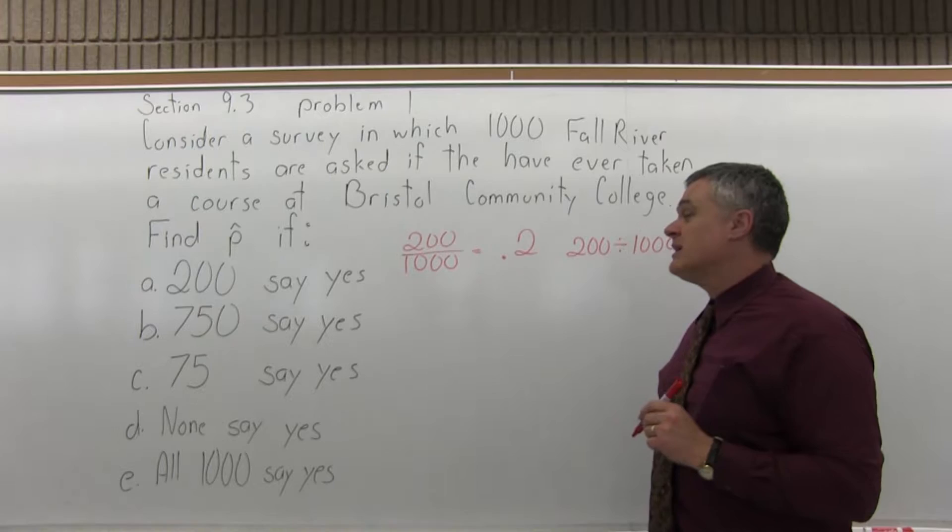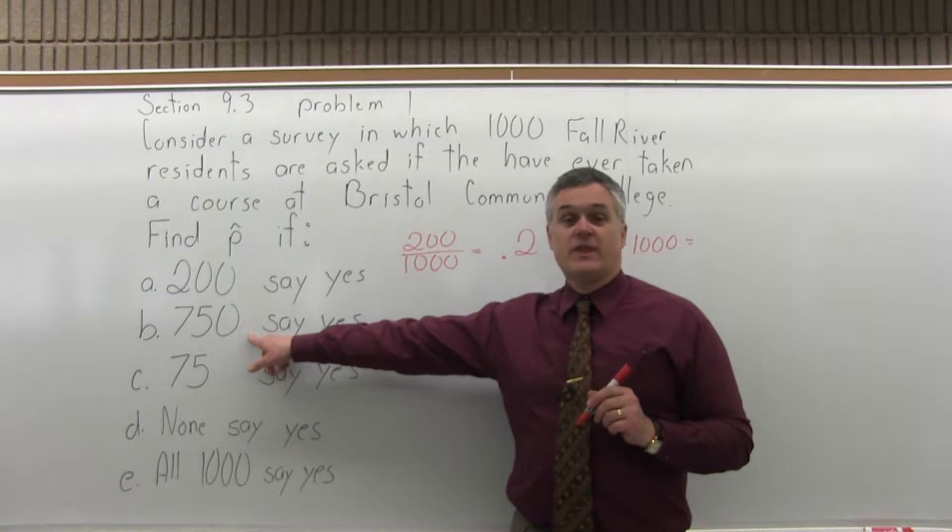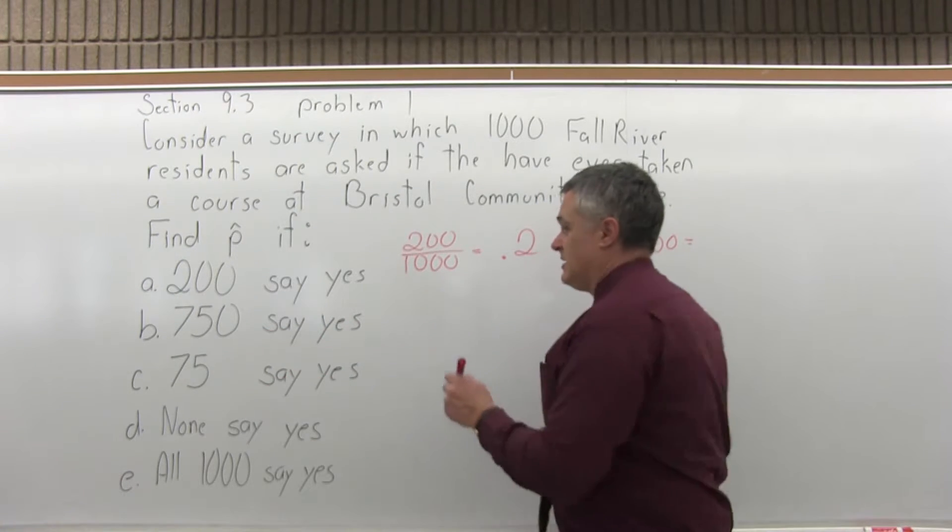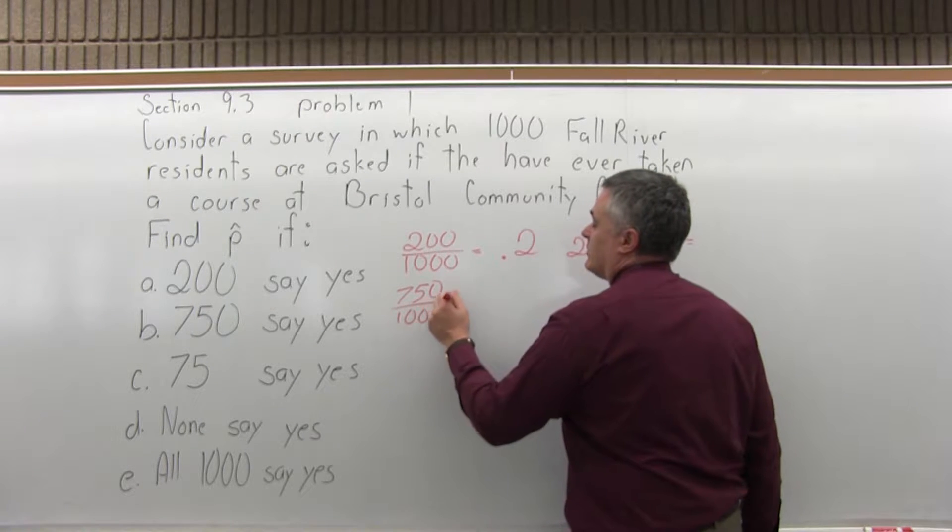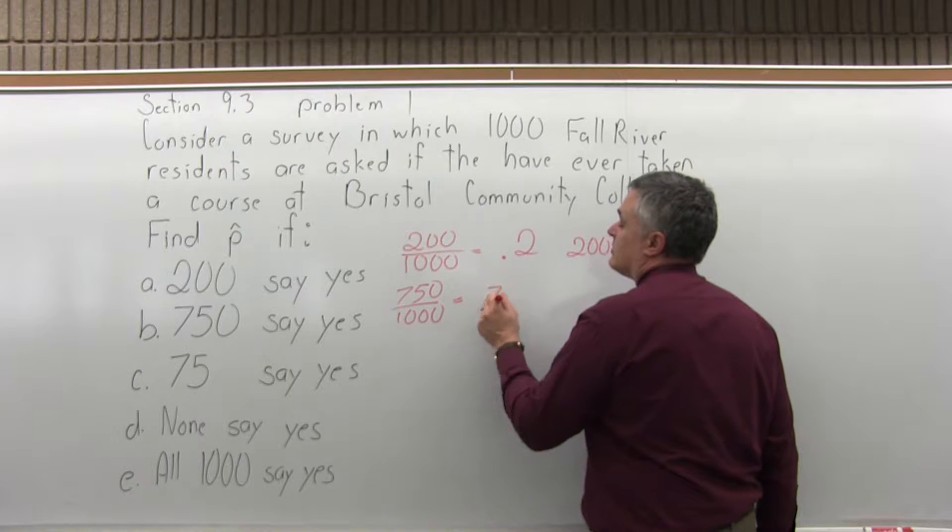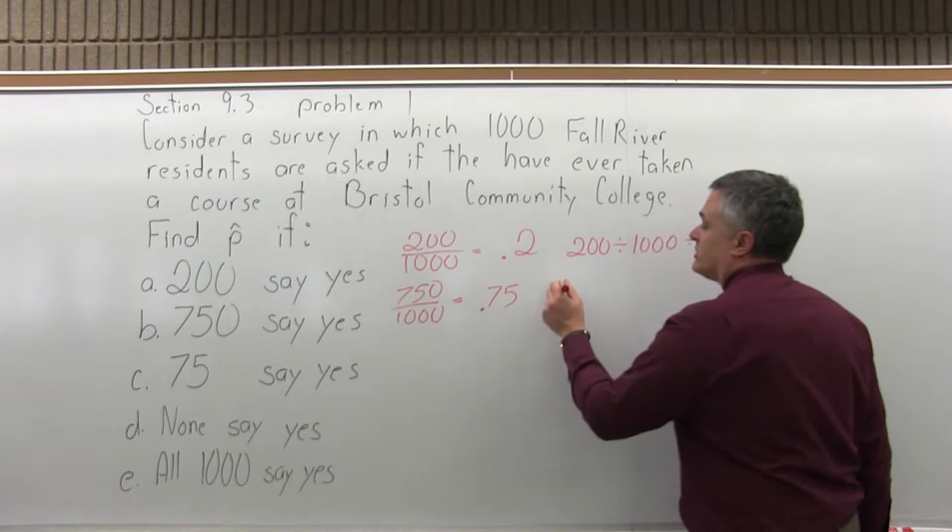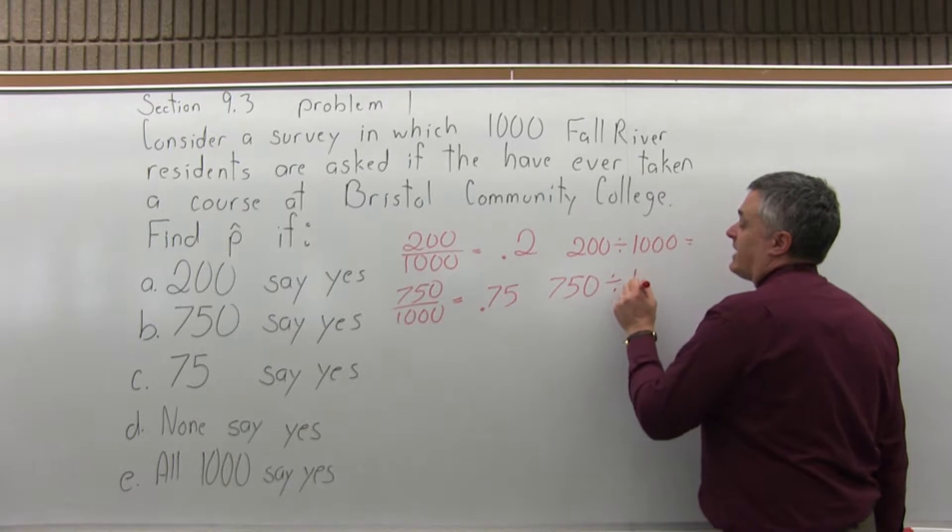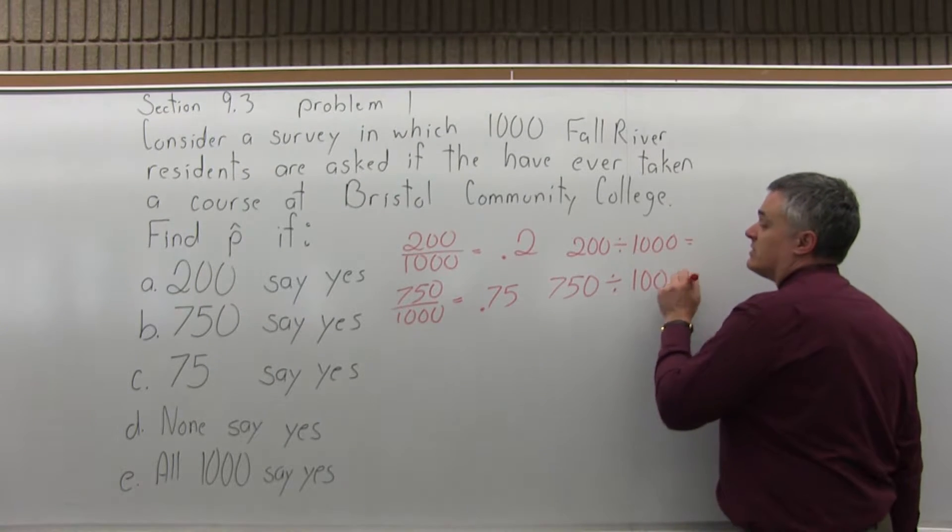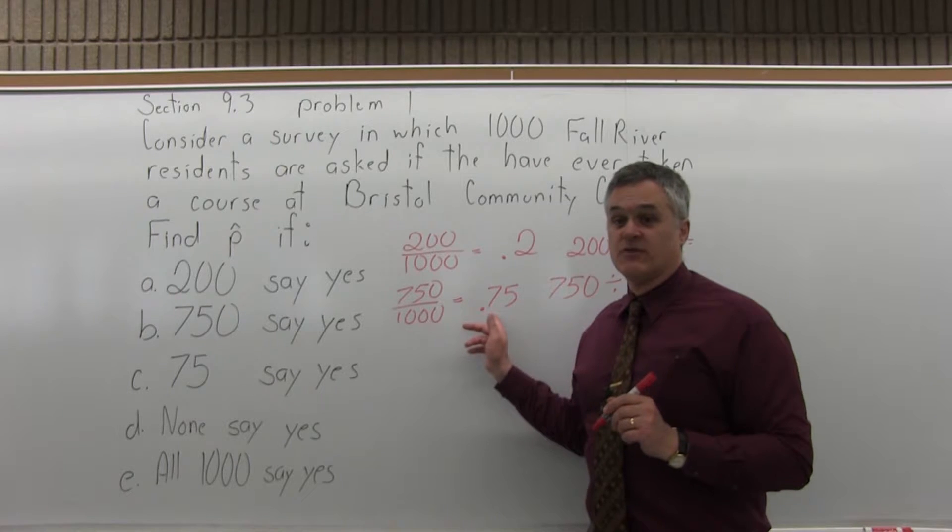The next one, if 750 out of the 1,000 say yes, it would be 750 over 1,000, which is 0.75. If you're not sure, use your calculator and do 750 divided by 1,000. That would be the value of P-hat, 0.75.